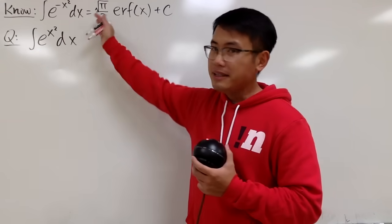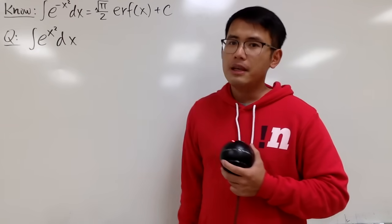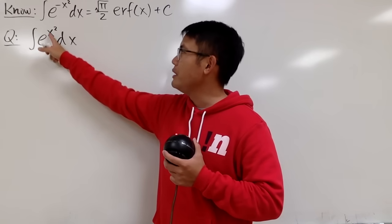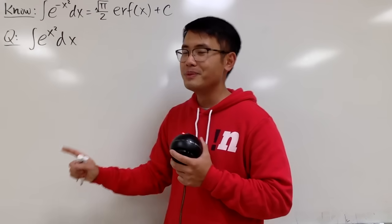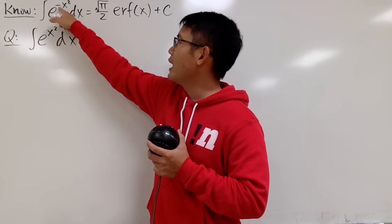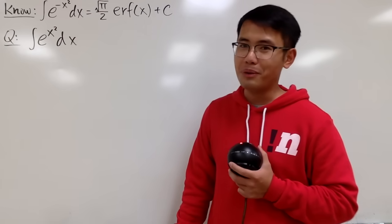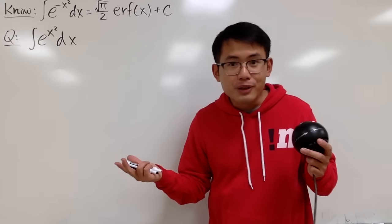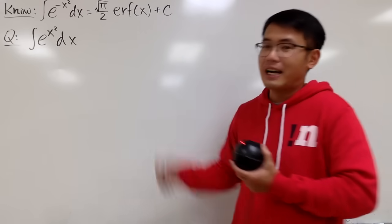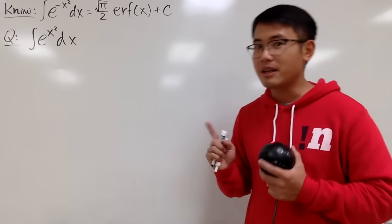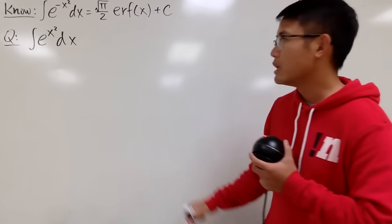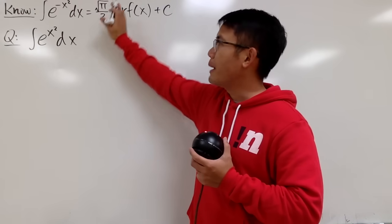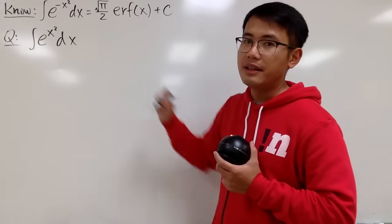Based on this, is it possible for us to figure out what is the integral of e to the positive x squared? Notice we don't have the negative anymore. Maybe we can come up with another function to answer that. Let's make a connection first — I will answer it based on the previous result, and here's how.